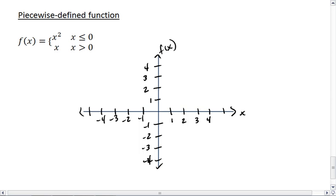Okay, so our piecewise function tells us that whenever x is less than or equal to 0, we graph the graph for x squared. So we get the normal x squared parabola, but only up until x equals 0.